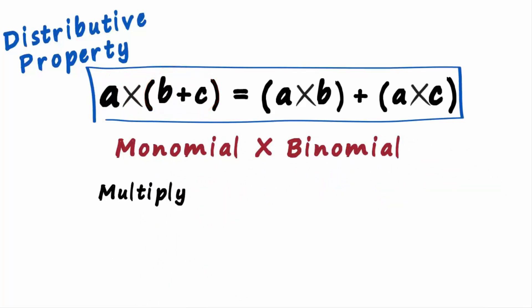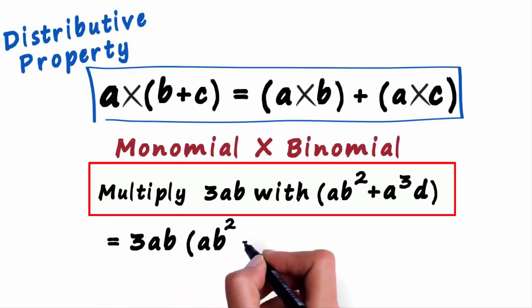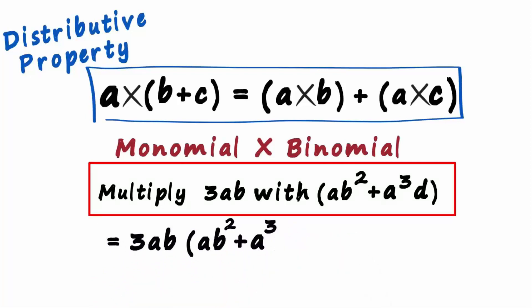Say we want to multiply 3ab with ab squared plus a cubed d. Let's first write this in simple form: 3ab multiplied by ab squared plus a cubed d.